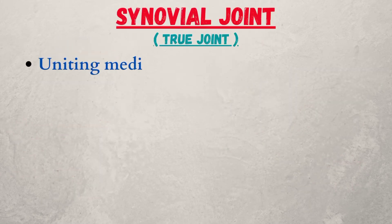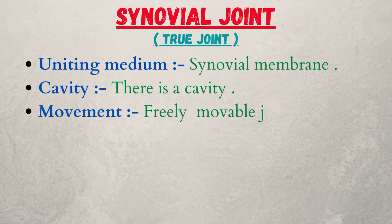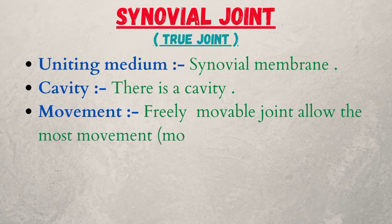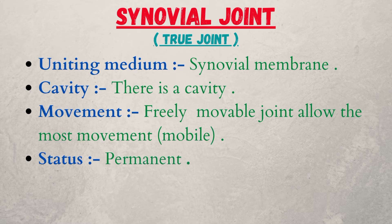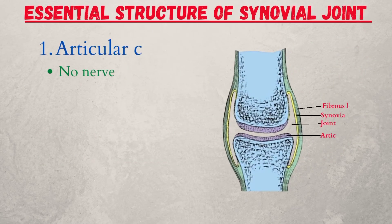The third type is the synovial joint, or true joint. The uniting medium is the synovial membrane. There is a cavity; it is a freely movable joint that allows the most movement — mobile. The status is permanent.